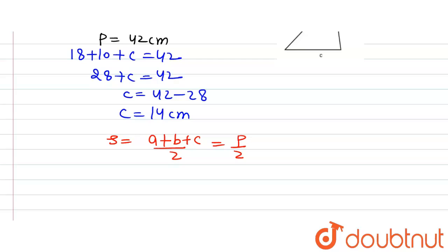Perimeter has been given in the question. So just putting in the value of perimeter we will get s is equal to 42 divided by 2 which will give us 21 cm.